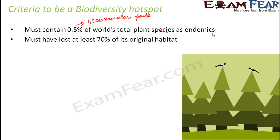The second criteria is that this region must have lost at least 70% of its original habitat. Loss of 70% of original habitat means that species themselves may be lost — the organisms or animals which used to live in that region are extinct; they do not exist anymore. So you actually lose that habitat.